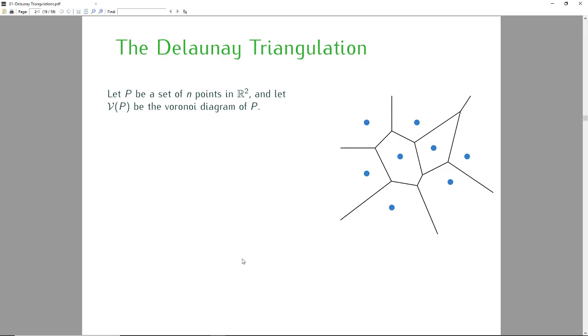Consider a set of points P. From what we know, the Voronoi diagram is a decomposition of a plane into regions, such that all the points in one region have that point as its closest point.